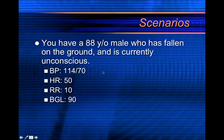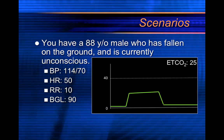Scenario two: you respond to an 88-year-old male who has fallen and is currently unconscious. He has a blood pressure of 114/70, a heart rate of 50 — a little slow — a respiratory rate of 10, which is also slow, and a blood glucose of 90. His capnography value is low — 25 — and that's concerning, especially with a respiratory rate of 10. If your respiratory rate is lower, you'd expect a higher end-tidal CO2.